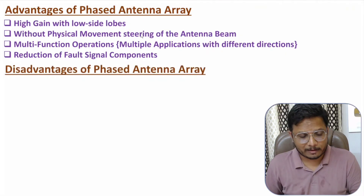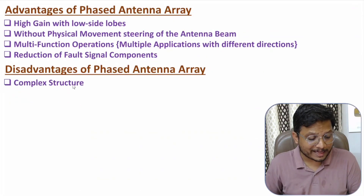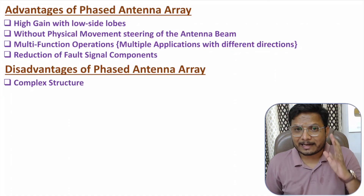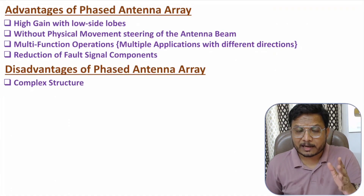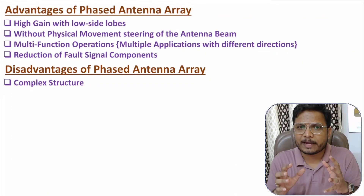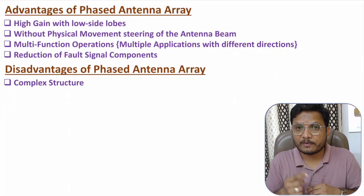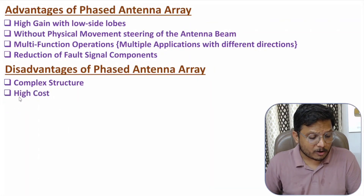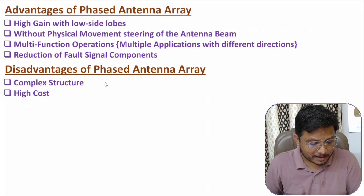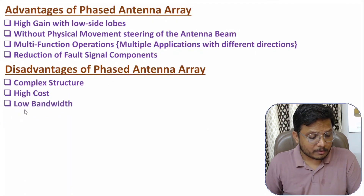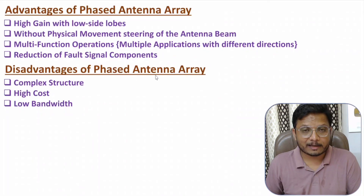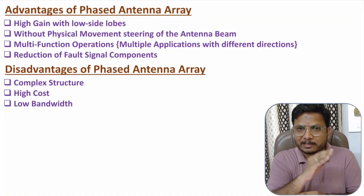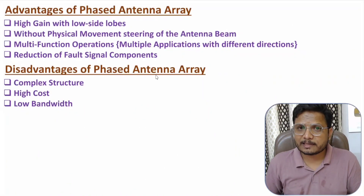There are a few disadvantages with phased antenna array. The structure is complex — we have multiple antenna elements connected with power amplifiers, phase shifters, and phase shifter controllers, and many applications use a DSP processor to control phase shifter values. It has higher cost because many elements are used in the structure. It also has lower bandwidth, because steering the beam limits the available bandwidth.